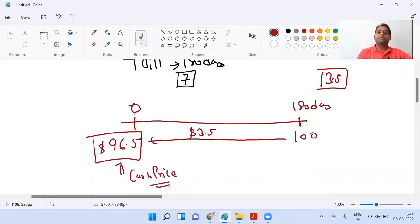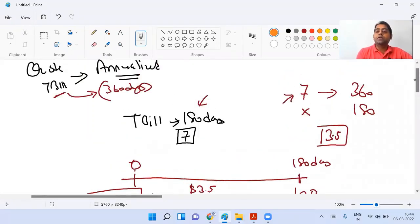So T-bills basically show you this number 7, which is the discount for the entire annual year. You have to convert it as per the bond and discount it from 100, so then you will get the price.